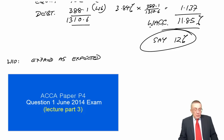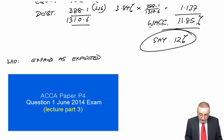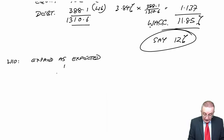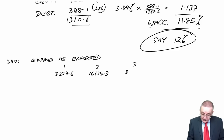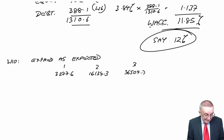We've been given the cash flows. First year: 3277.6. Times 2: 16134.3. Times 3: 36504.7. And the fourth year: 35683.6.